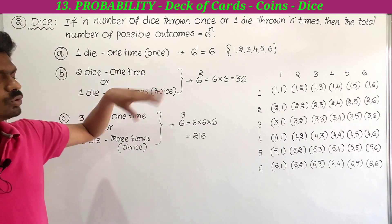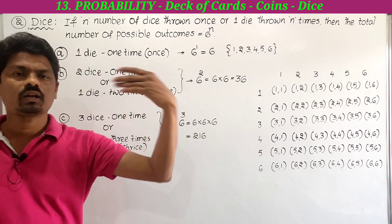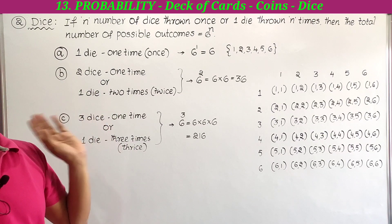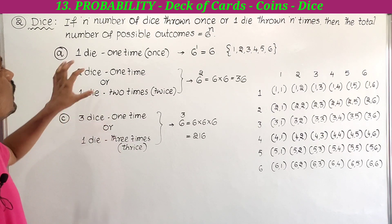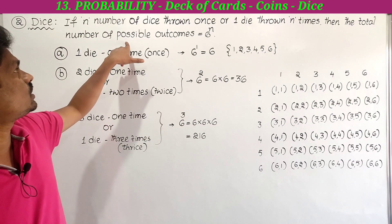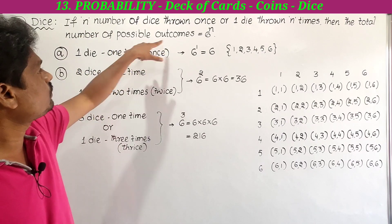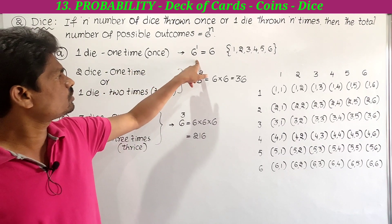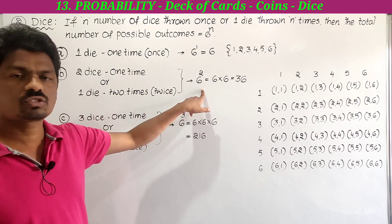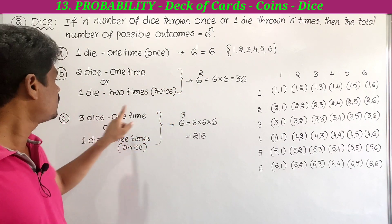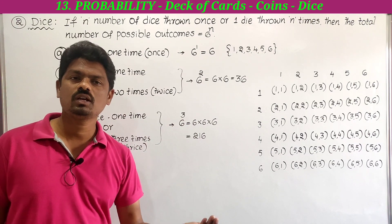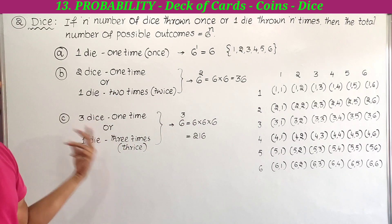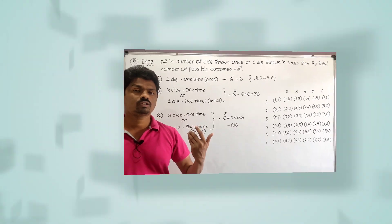This is the formula for the total number of possible outcomes using dice: 6 to the power n. So 1 die gives 6 to the power 1, 2 dice give 6 to the power 2, 3 dice give 6 to the power 3, and 10 dice give 6 to the power 10. You can easily solve the problems using this formula.